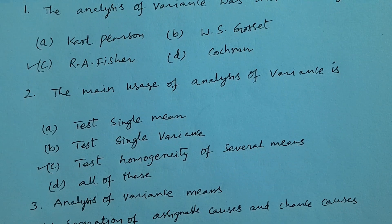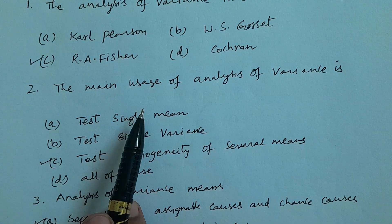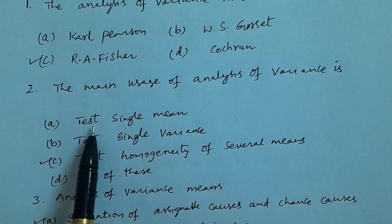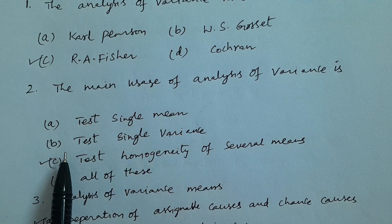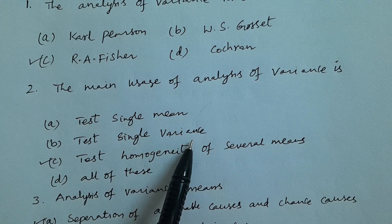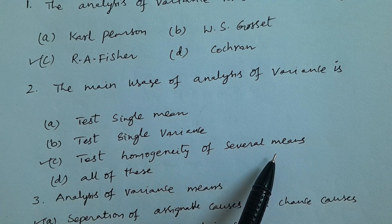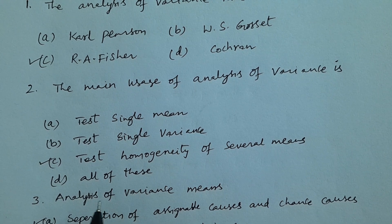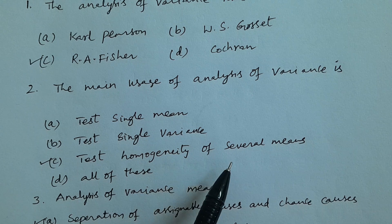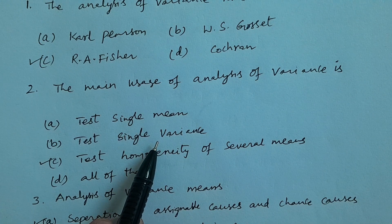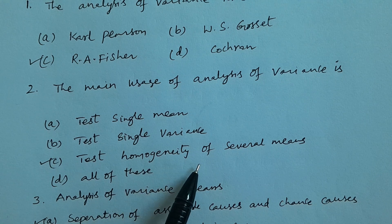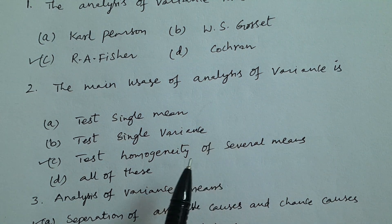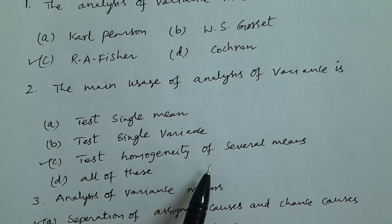Question number two: What is the main usage of Analysis of Variance? Options: A. Test for Single Mean, B. Testing the Single Variance, C. Test Homogeneity of Several Means, D. All of These. The answer is C — Test for Homogeneity of Several Means. For single mean and single variance we use different tests, but to test the homogeneity of several means we use Analysis of Variance, which is specially constructed for that purpose.